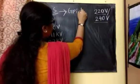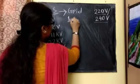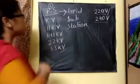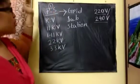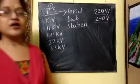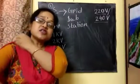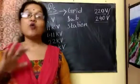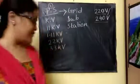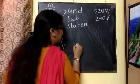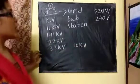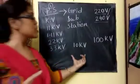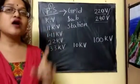After the power station, the electrical energy goes to the grid substation. The grid substation is a place where we do a step-up of the electrical energy. For example, suppose I have 10 kilo volt of AC electrical energy and I need 100 kilo volt — the instrument that does this is called a transformer.